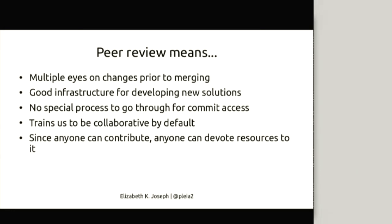Moving into this team meant we're doing code review for every single change. We try not to log into the servers and make changes — that's what Puppet is for. Every single change that happens to our infrastructure is peer reviewed and has to be reviewed and approved by two other core members of the team. There are nine core members now. So instead of everyone going off in their own way and fighting fires, we're all collaboratively looking at every single change submitted to the infrastructure.